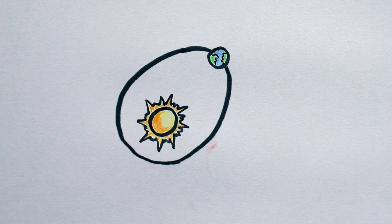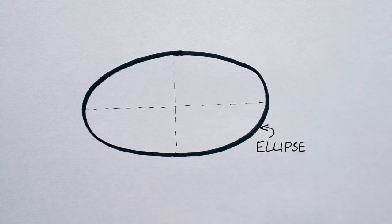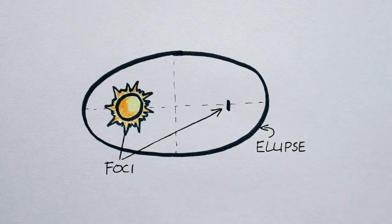An orbit is the gravitationally curved path of an object around a point in space, like a planet orbiting the center of a star system. Kepler's first law of planetary motion tells us that all orbits are ellipses with the center of mass at one of the two foci. So ellipse, two foci, a star at one of them, and a planet.